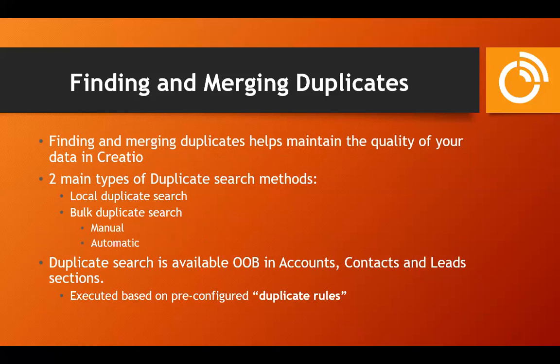Having duplicates in your data is not great — it's going to cause metrics to be off in your reports and confusion for users when they're trying to figure out which record to update. Creatio has a couple of different techniques to find duplicates: the local duplicate search, which happens when you're creating a new record and warns you before the duplicate even exists in the database, and the bulk duplicate search that allows you to scan through all your records after the fact.